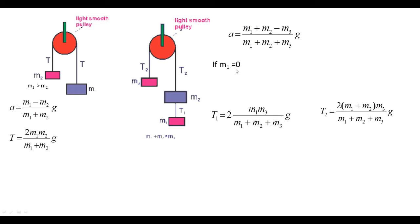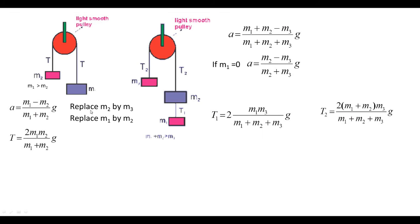Making m1 equal to 0: the system reduces to a two-block pulley with m2 and m3. The acceleration becomes (m2 minus m3)/(m2 plus m3)·g. To verify this matches the two-block formula, replace m1 with m2 and m2 with m3 in the two-block expression, giving m2 minus m3 divided by m2 plus m3, multiplied by g — which matches.